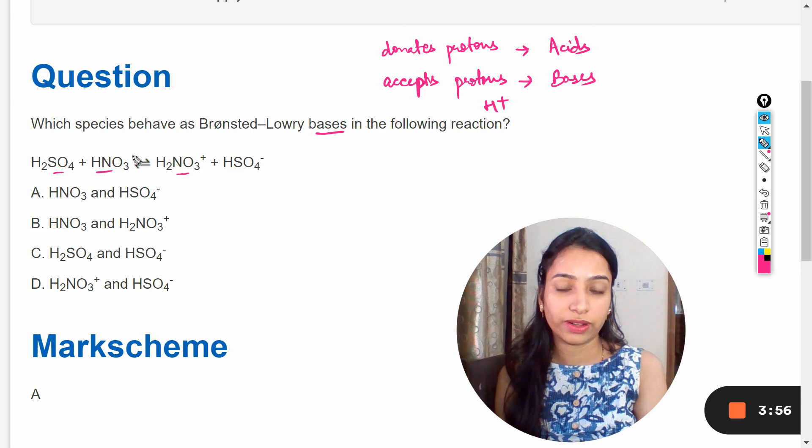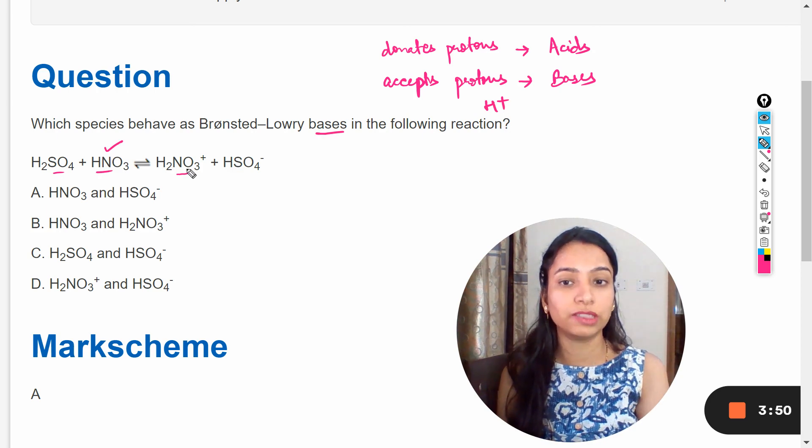In the forward reaction this HNO3 accepts the proton, means this HNO3 will be the Brønsted-Lowry base for the forward reaction.